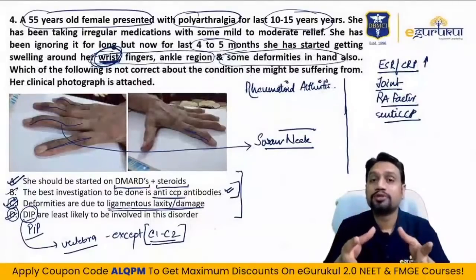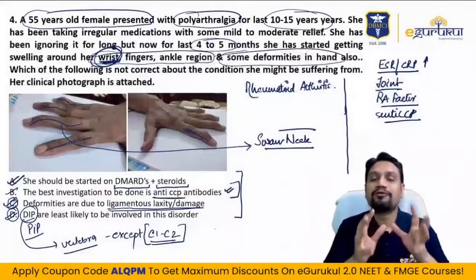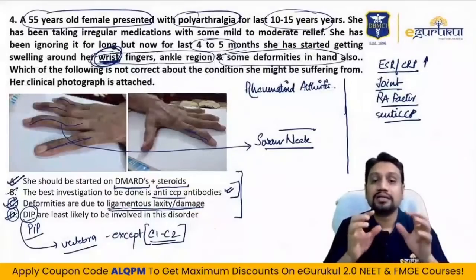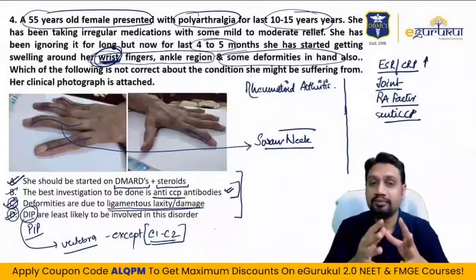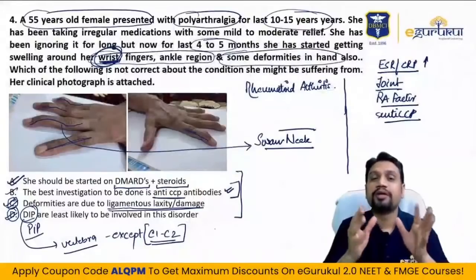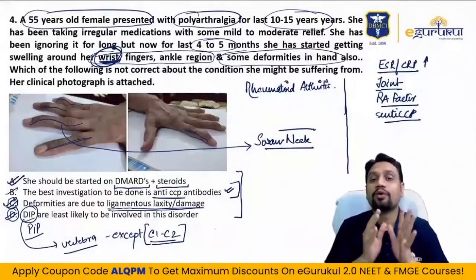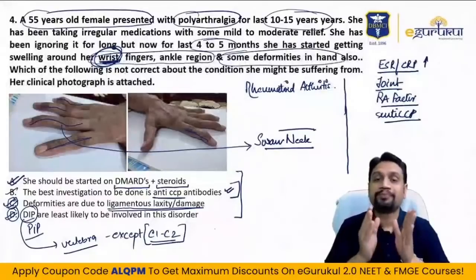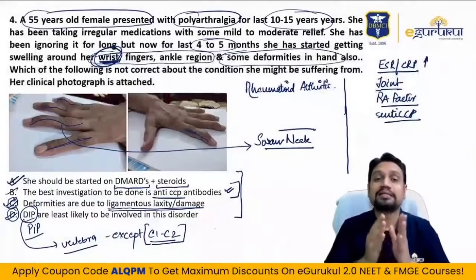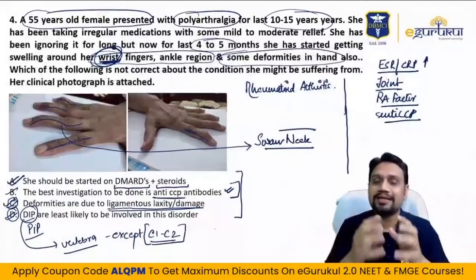Hemophilic arthropathy — knee most commonly involved, triple deformity, compression bandage as treatment, relative contraindication is aspiration and arthroscopy. Gouty arthritis — first MTP joint involvement, podagra; pseudogout — knee most commonly involved. Best way to diagnose gout and pseudogout is by aspiration. Neuropathic joint — diabetes causes involvement of intertarsal joints; tabes dorsalis causes knee involvement; leprosy causes involvement of fingers.